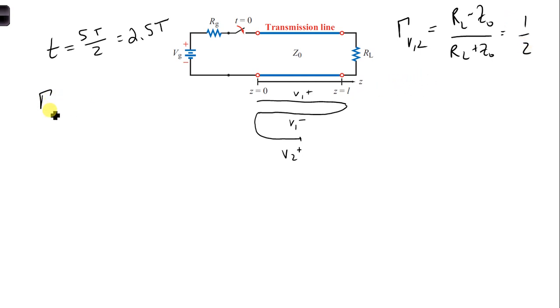Then for the generator side, our reflection coefficient for the voltage at the generator is RG minus z0 over RG plus z0, and plugging in our numbers and simplifying, we get 1 fifth.